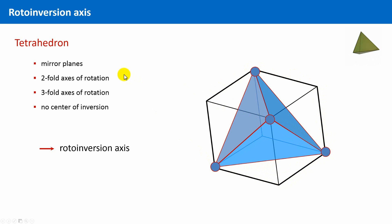A tetrahedron is also a very high symmetric object. It contains mirror planes and two-fold as well as three-fold axis of rotation, but in contrast to the octahedron, it has no center of inversion.